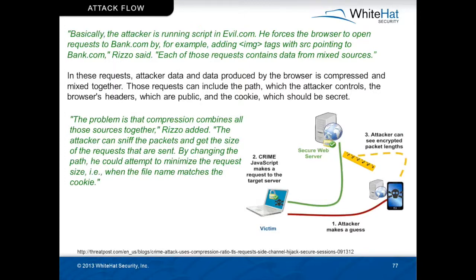Basically, the attacker is running a script on evil.com. He forces the browser to open a request to bank.com by, for example, adding image tags with sources pointing to bank.com, slowly changing character by character the request being sent to bank.com. Each of those requests contains data from mixed sources — the path, the cookies, the headers. The attack data and the data produced by the browser are compressed and mixed together. Those requests include the path, which the attacker controls, the browser headers, which are public, and the cookie, which should be secret. The compression combines all those sources together, and the attacker can sniff the packet to guess the size of the request by changing the path. The compression leaks the size, and then brute forcing allows you to determine what's in the encrypted data.